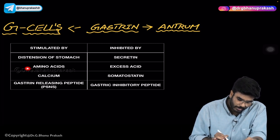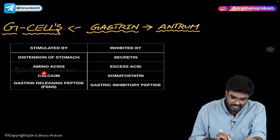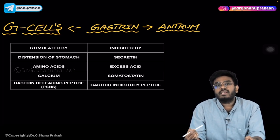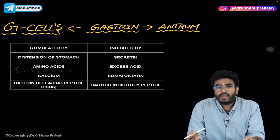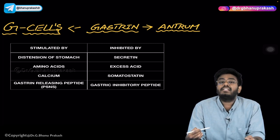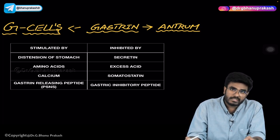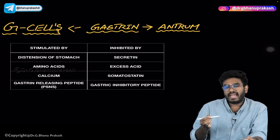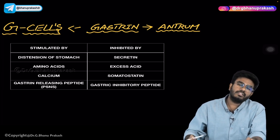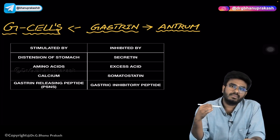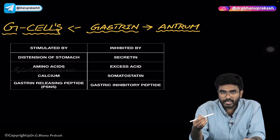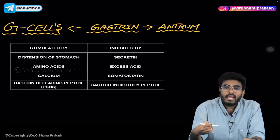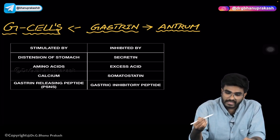So the four conditions where gastrin production is increased are: distension of the stomach, amino acids, calcium, and gastrin-releasing peptide. Whenever any of these conditions are present, gastrin release is stimulated.